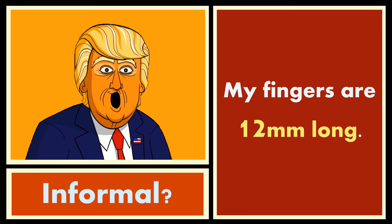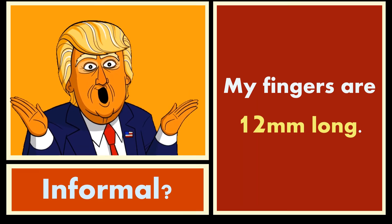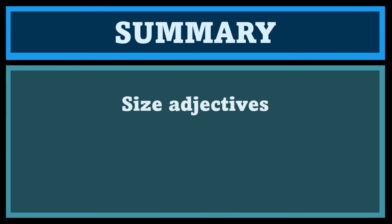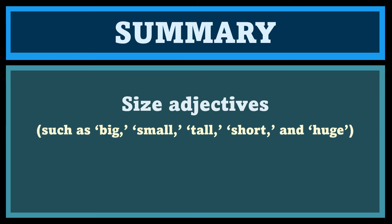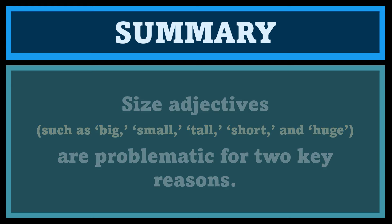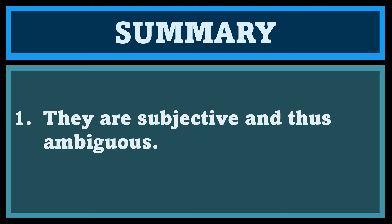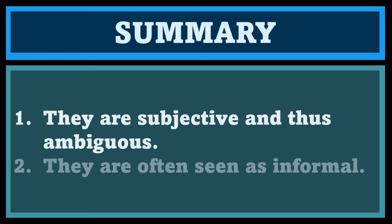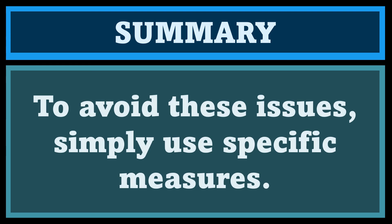Quick summary: size adjectives such as big, small, tall, short, and huge are problematic for two key reasons. First, they are subjective and therefore ambiguous. Second, they often seem informal. To avoid these issues, simply use specific measures, and the reader will have a clear, concrete understanding of exactly what you are talking about.